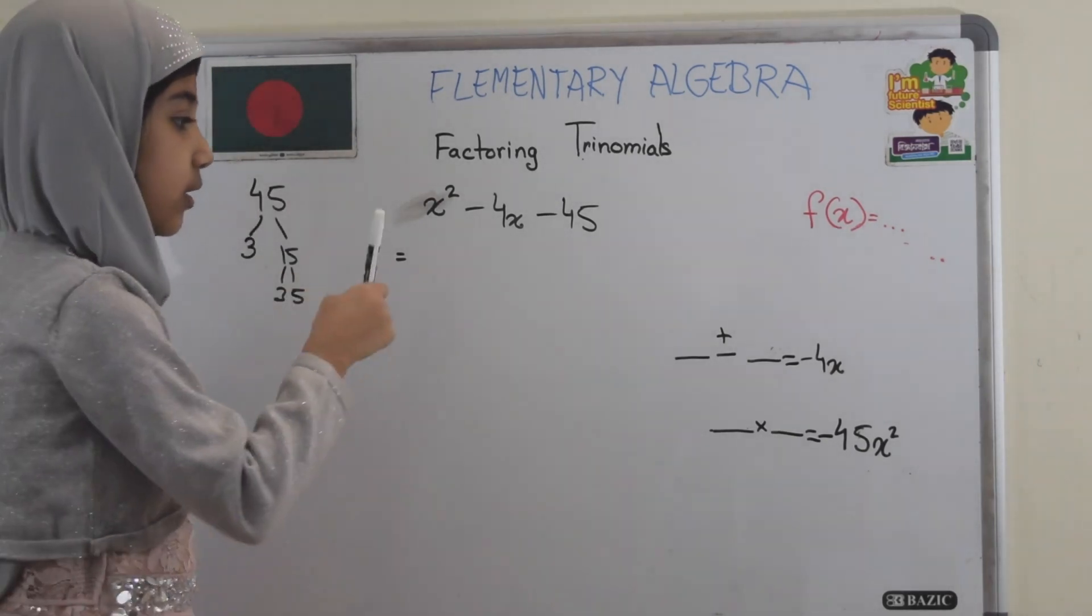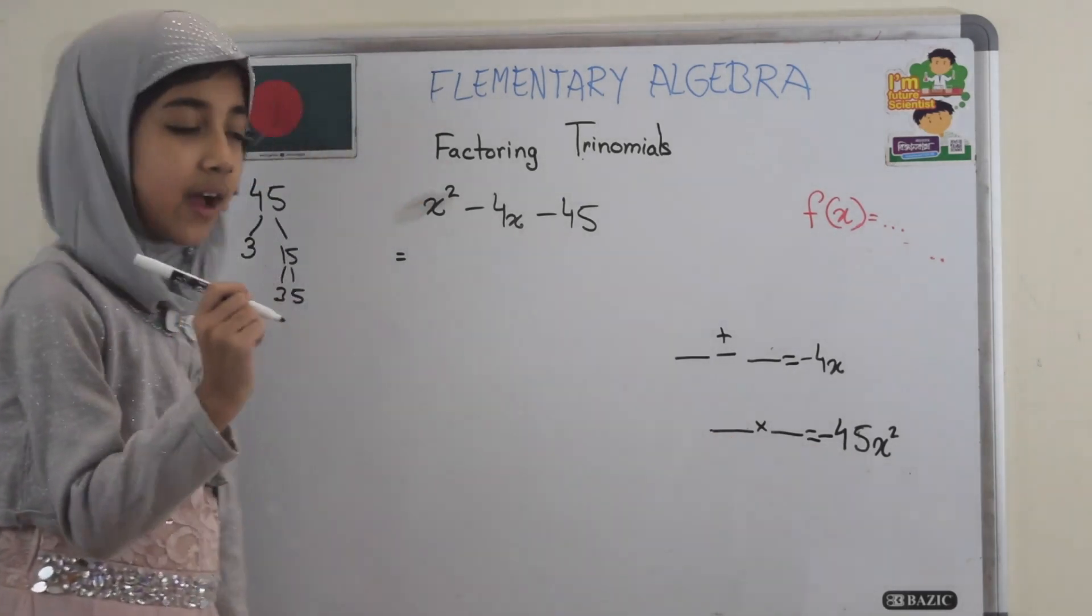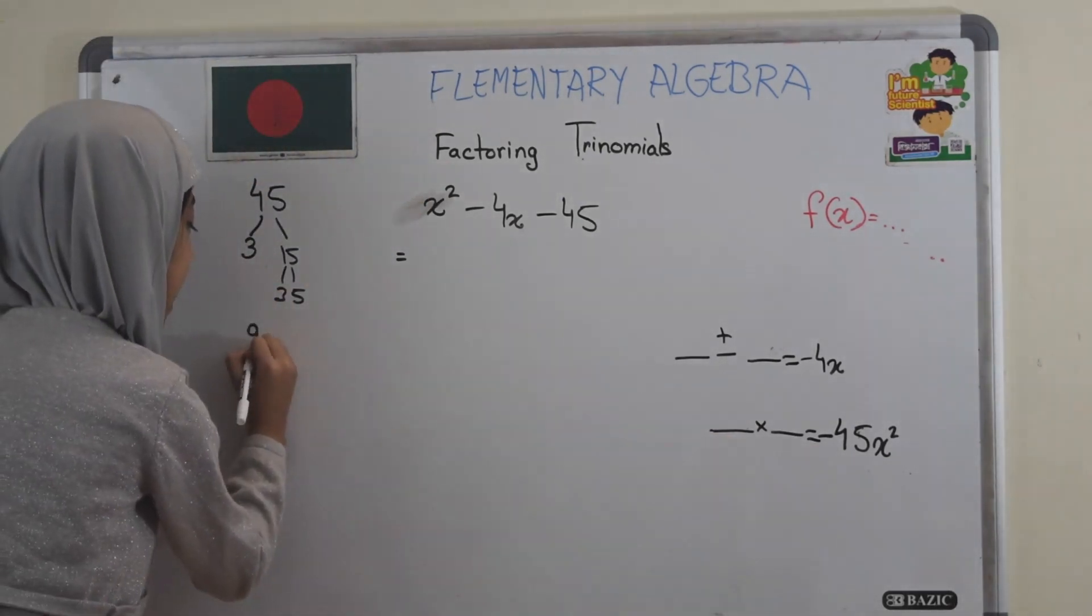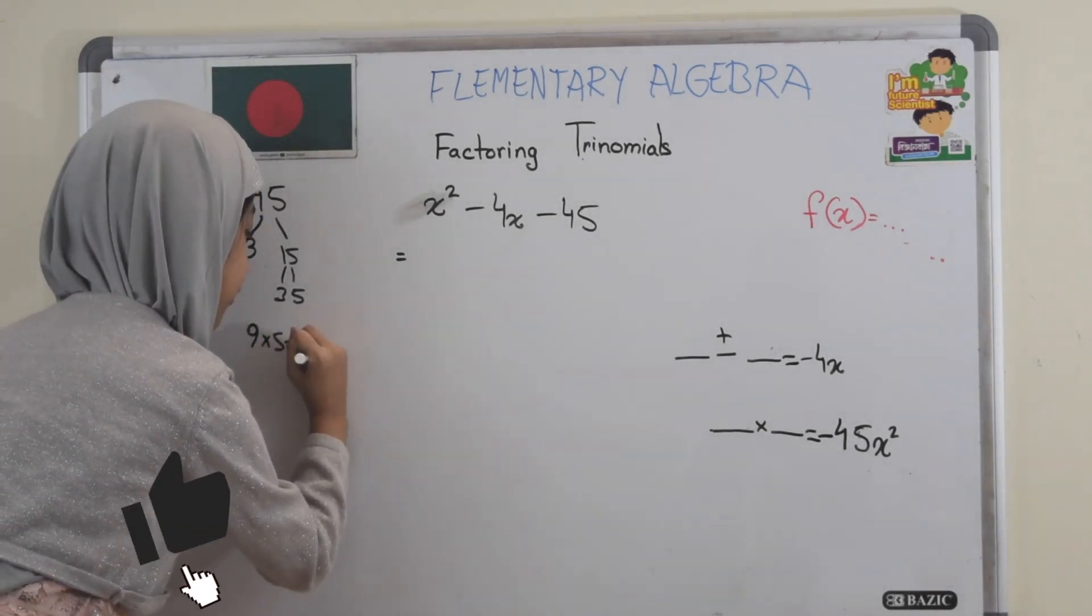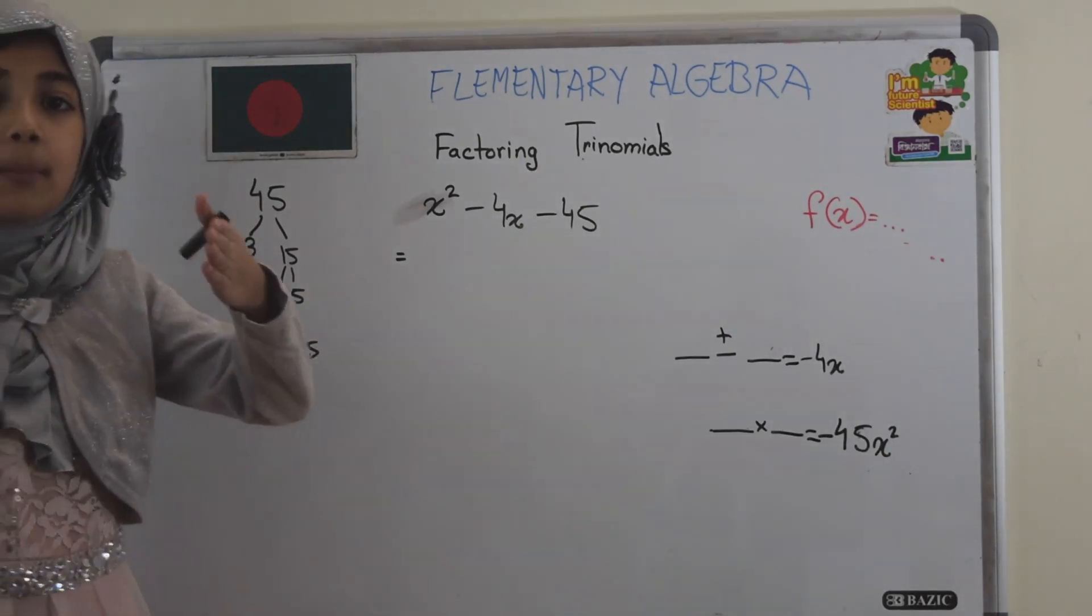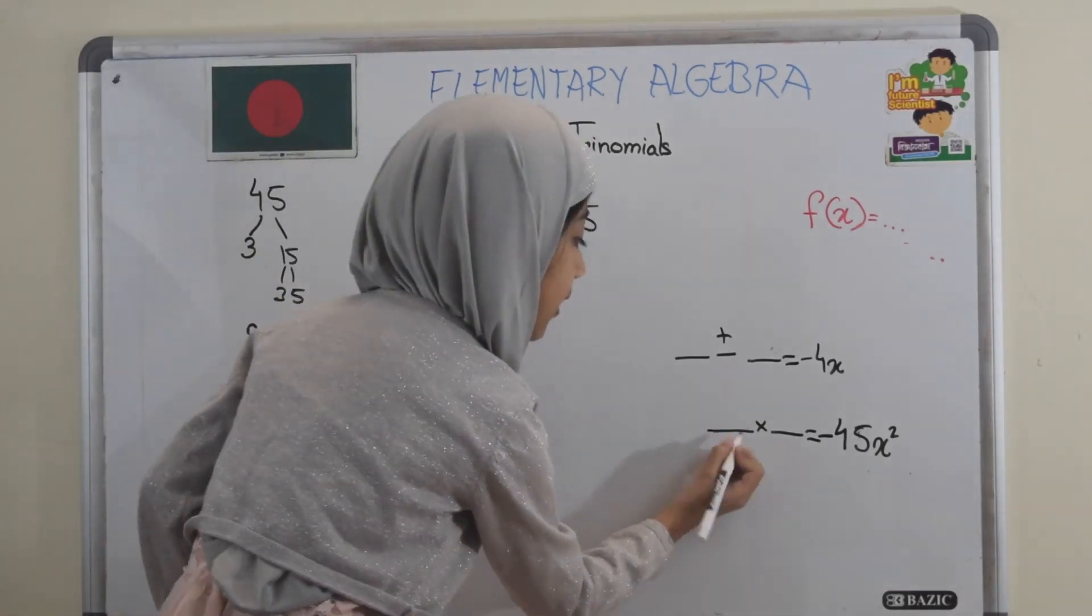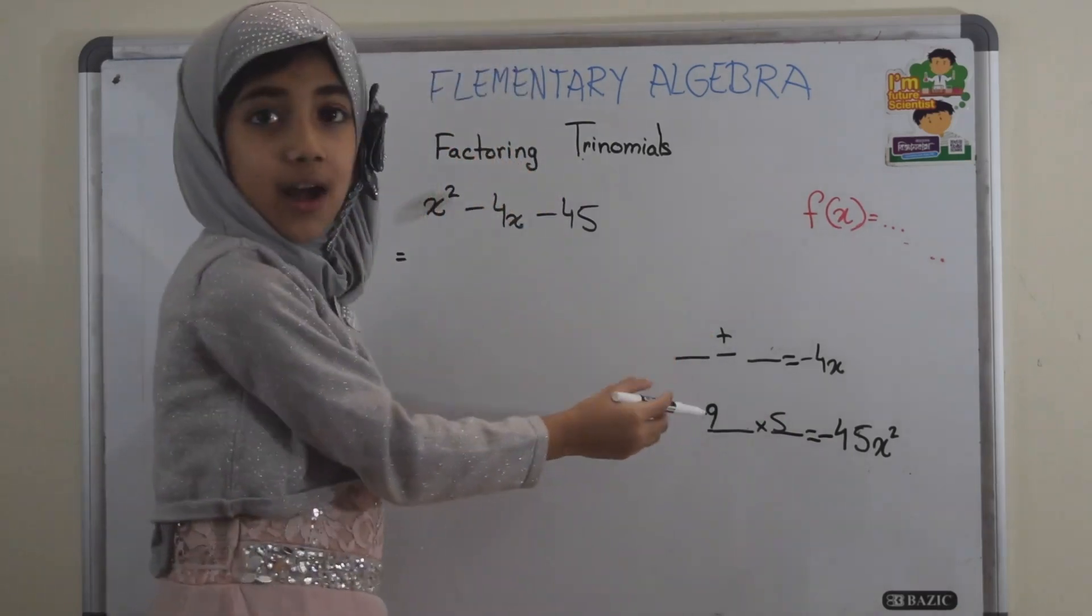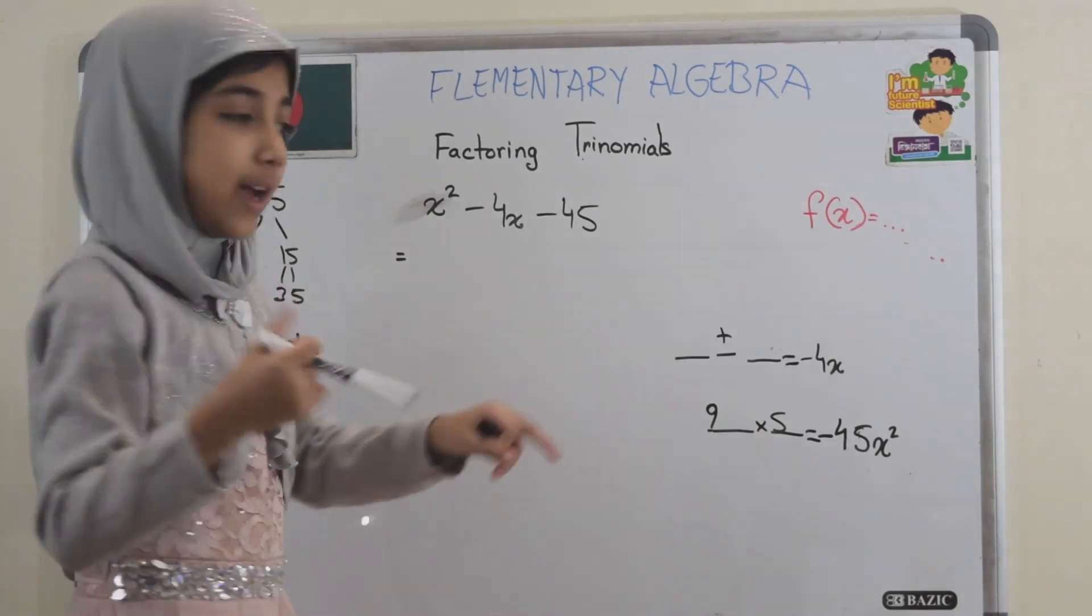Now, in order to make it equal to 45, I already see that 3 times 3 is 9, and 9 times 5 is equal to 45. So that means 9 and 5 are my two numbers. But we've got to see what you should do to make it equal to minus 4x.